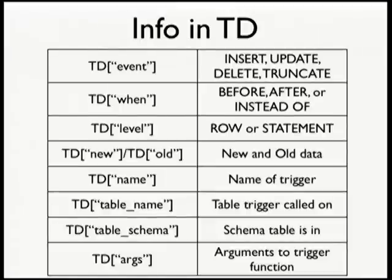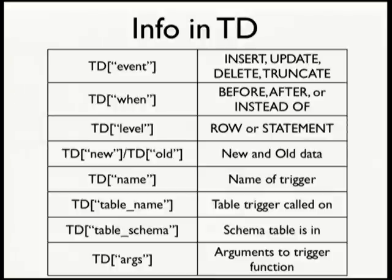The TD variable gives us several things: an event telling us what SQL operation is happening; 'when' — when the trigger is being fired, useful if you want to write triggers that apply in different ways to different tables, applying before or after a statement, or 'instead of' to skip that SQL statement entirely; and the level — whether it's row or statement. Then new and old copies of the row, the name of the trigger itself, the name of the table and schema, and you can also pass arguments to triggers, such as which column name to check — since your 'active' column might be named differently across tables.